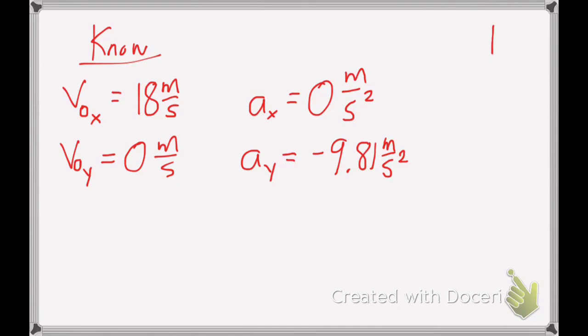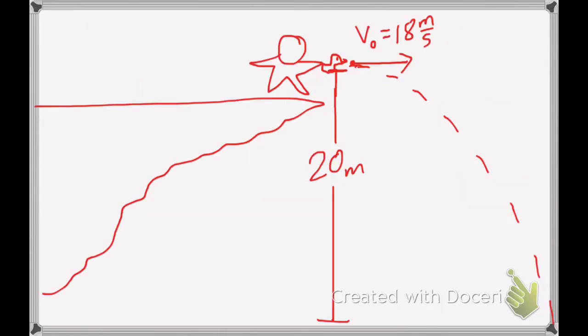I was kind of bad and didn't start out by declaring my directions in the first place, so let me go ahead and do that now. Up is positive, down is negative, right is positive, left is negative. I'm also going to declare my starting x position as 0 and my starting y position as 20 meters. This is because I declared up to be positive, so since I'll be landing on the ground, let's call that 0, and up on the cliff, that's 20 meters vertically.